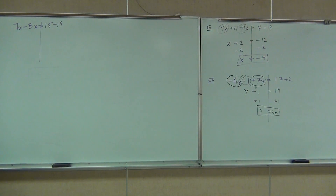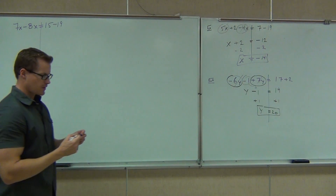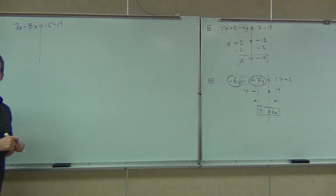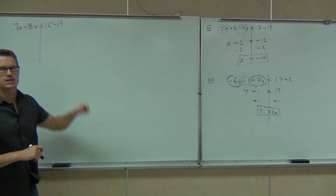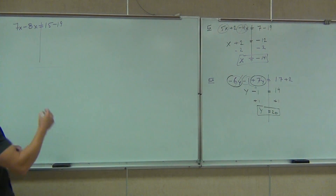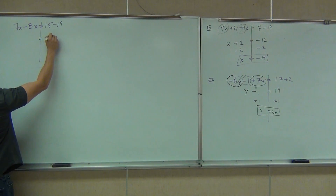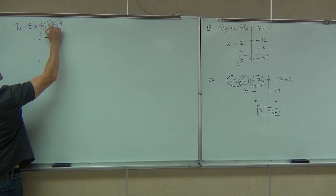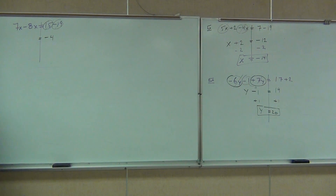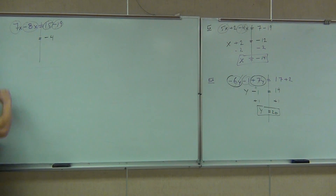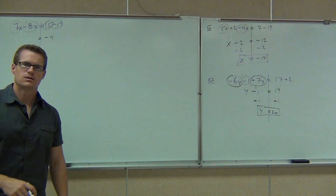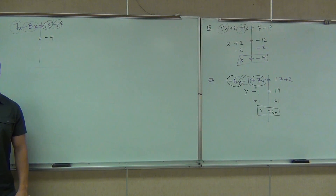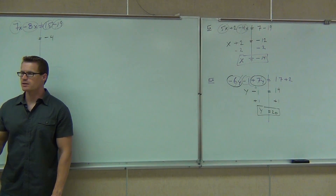Still got some equations. Do we have any like terms? Yes, for sure. Let's combine them. On the right-hand side, tell me what I'm going to get when I combine my 15 and my minus 19. What am I going to get? Negative 4. Perfect. Different signs, subtracts, sign the bigger number — we get negative 4. On the left-hand side, I see the 7x and the minus 8x or negative 8x. What am I going to get out of that? Negative x. We've got to be careful on this, whether you're going to get x or negative x. Negative x.